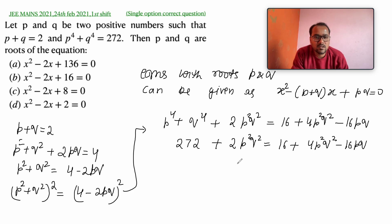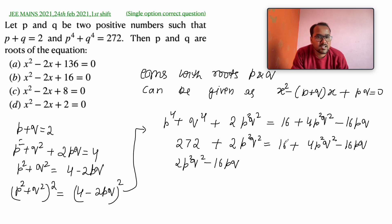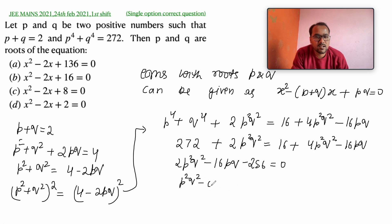Rearranging the terms: p to the 4th plus q to the 4th equals 272, so substituting and simplifying gives 2p squared q squared minus 16pq plus 16 minus 272 equals zero, which becomes 2p squared q squared minus 16pq minus 256 equals zero. Dividing by 2 gives p squared q squared minus 8pq minus 128 equals zero. This is a quadratic in pq.